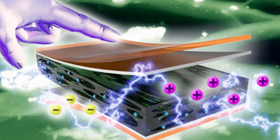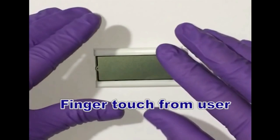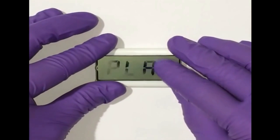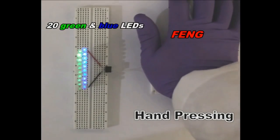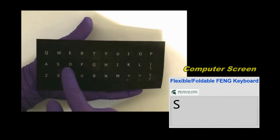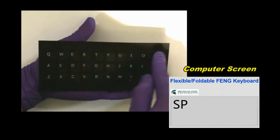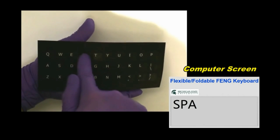With the low-cost device known as a nanogenerator, the scientists successfully operated an LCD touchscreen, a bank of 20 LED lights, and a flexible keyboard, all with a simple touching or pressing motion and without the aid of a battery.